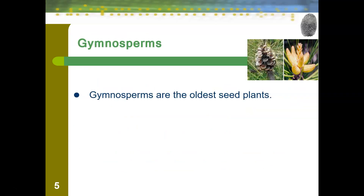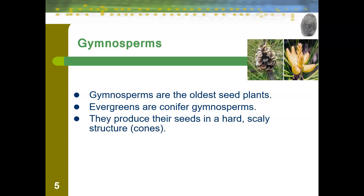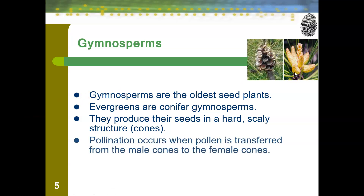Gymnosperms are the oldest of the seed plants — the first to evolve. You are probably most familiar with gymnosperms as evergreens, which are conifer gymnosperms. They produce their seeds in hard, scaly structures known as cones. The pine cone you're familiar with is actually the female portion of the plant. Male pine cones are a yellow structure. Pollination occurs when pollen is transferred from these yellow male cones to the female pine cones. When a pine cone is closed up, it's not the time of year for pollination; they open up when they're ready to accept pollen.